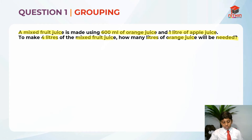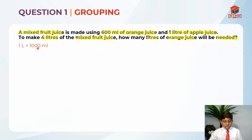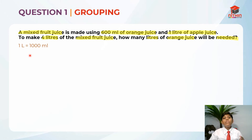The first step is to convert. 1 liter is equal to 1000 ml. We take 1 times 1000, which gives us 1000 ml. Remember: converting from liters to milliliters, it is times 1000, and converting from milliliters to liters, it is divided by 1000. Keep that in mind.